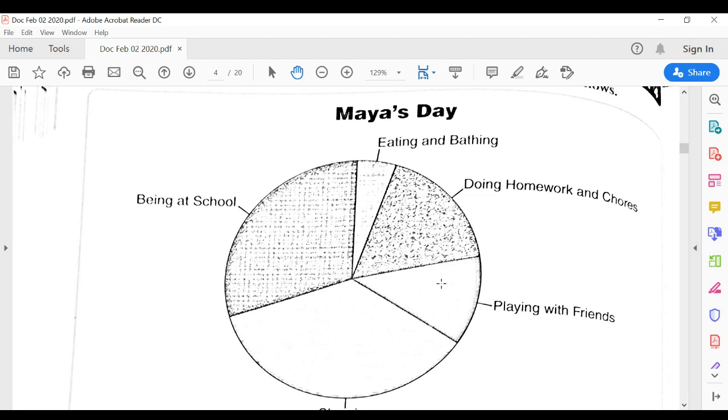In a pie chart, circle graph, or circle chart, they can be called any one of those names. Go ahead and study the chart for a second.